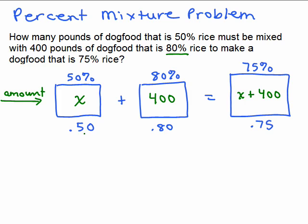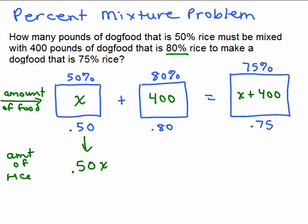Now let's consider how much rice is in each of these vats. This is the 50% vat — writing that as a decimal, it's 0.50. The 80% is written underneath. I'm writing the percents as decimals under each vat. Now I'm going to write out the amount of rice in each bag. 50% of the bag is rice for the first one, so that's 0.50 times X — that's how much rice is in that bag. How much rice is in the second bag? 80% of the 400, so that's 0.80 times 400.